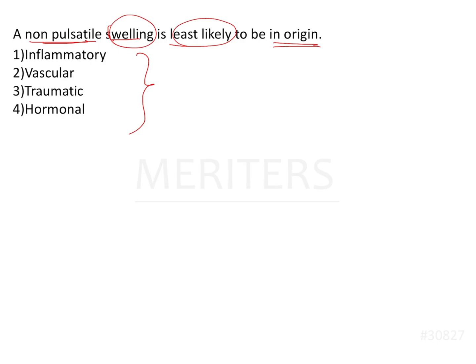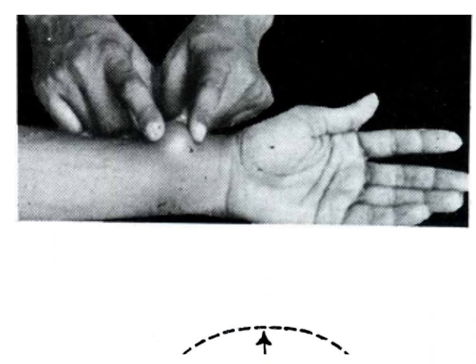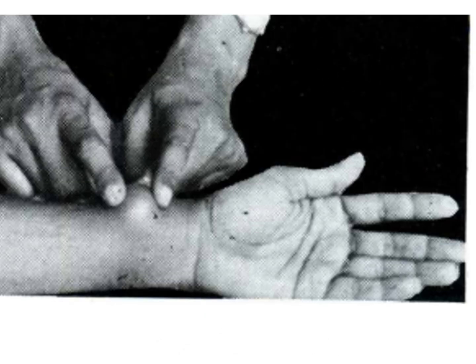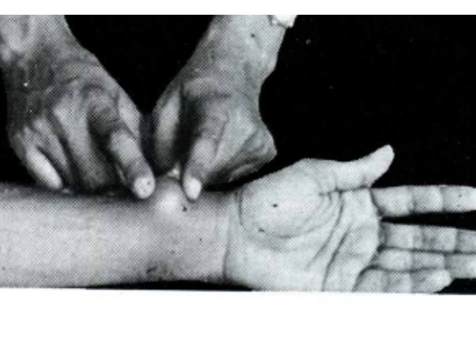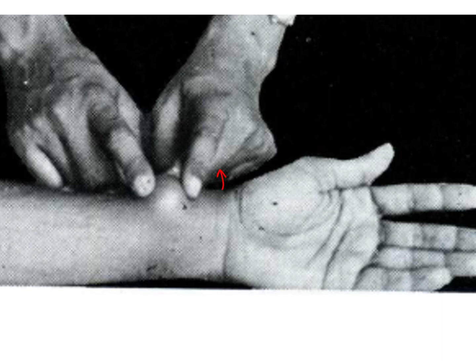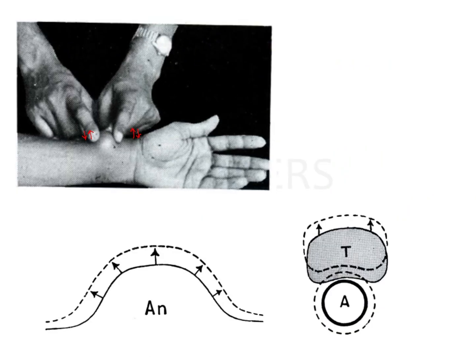Or it could be that the swelling itself is very vascular, such as a telangiectasia. To elicit the pulsatile test, you have to keep two fingers along the edges of the swelling, and with each pulsation you will notice that the swelling is going to rise and fall. If the swelling rises and falls in the same direction — that is, there is more of a parallel movement — this shows that the swelling is very close to a blood vessel or an artery.